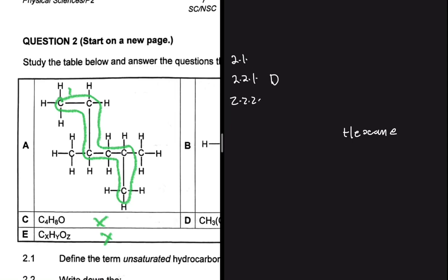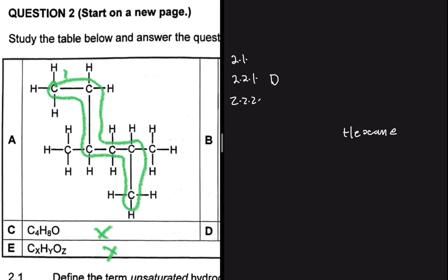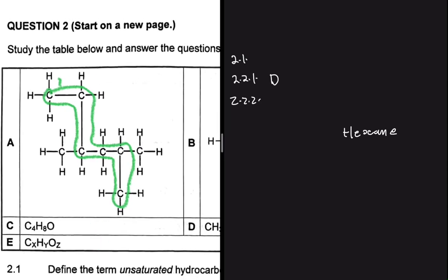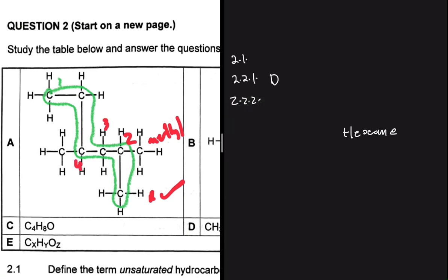Now let's look at the branches. If we start counting from one end, we get a branch on carbon two. From the other end, we get a branch on carbon three. So it's better to start from the bottom — carbon one, carbon two — giving a branch on carbon two and on carbon four. Both branches are methyl groups, so the IUPAC name is 2,4-dimethylhexane.